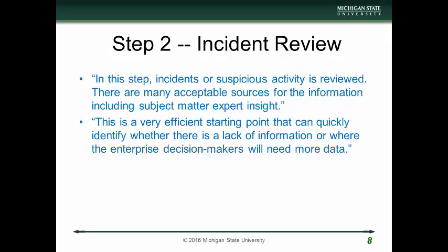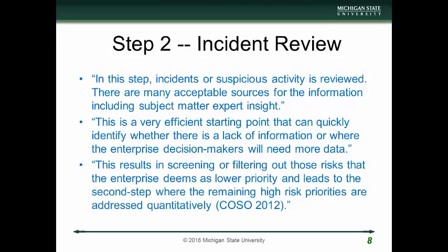The bottom line is the resource allocation decision makers need enough data to assess whether they support mitigating this risk or whether it's acceptable. You want to run through this quickly to identify where they do or don't need more detail. The results in screening or filtering out lower-priority risks lead to the second step where remaining high-risk priorities are addressed quantitatively. This is a process and method to identify which ones you work on first.